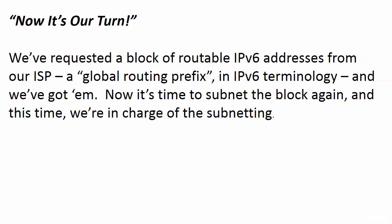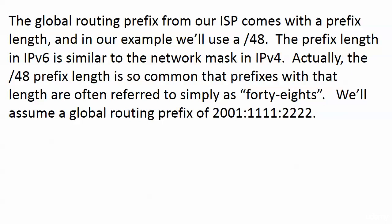Now it's our turn to start subnetting. We've requested a block of routable IPv6 addresses from our ISP — a global routing prefix — and we've got them. Now it's time to subnet the block, and this time you and I are in charge. The global routing prefix from our ISP comes with a prefix length, and in this example we're going to use a slash 48. The prefix length in IPv6 is really like the network mask in version 4. A slash 48 prefix length is so common that prefixes with that length are often just referred to as '48s'.